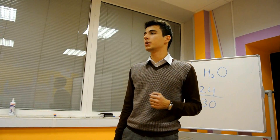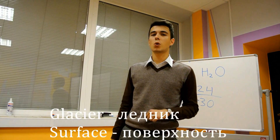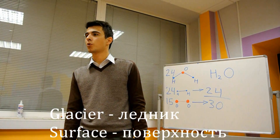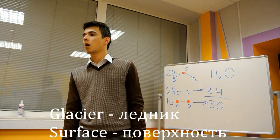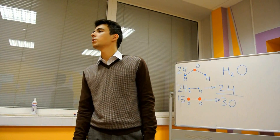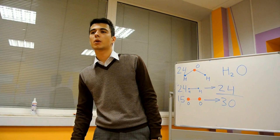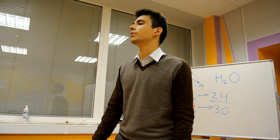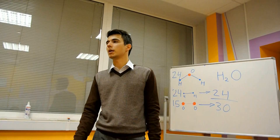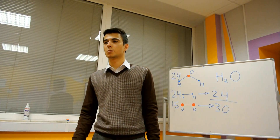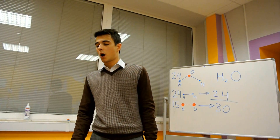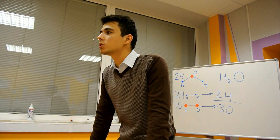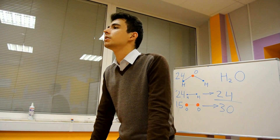Water in the liquid state in the oceans and in the solid state in the glacial areas covers around 70% of the Earth's surface. Seawater contains around 35 grams of salt per kilogram, though water from the most salty sea, the Red Sea, contains about 40 grams per kilogram of water. And my second question is: where is the most salty sea situated?